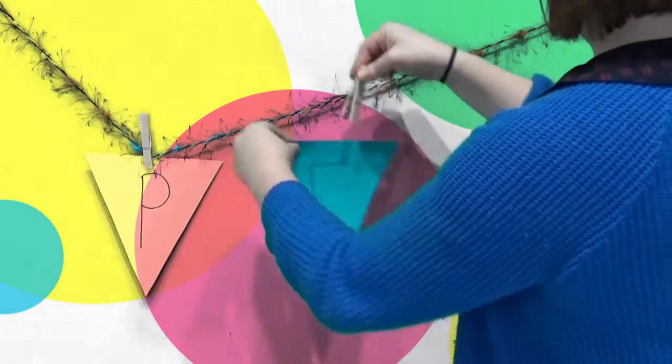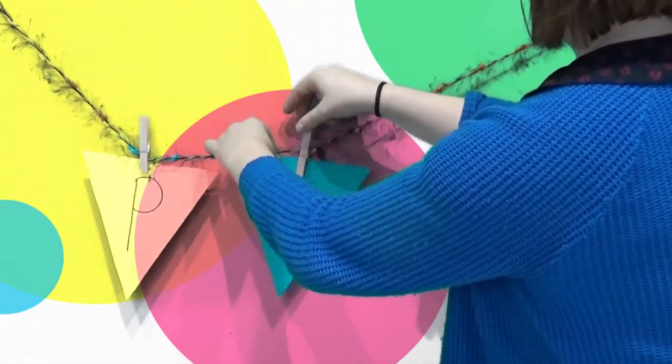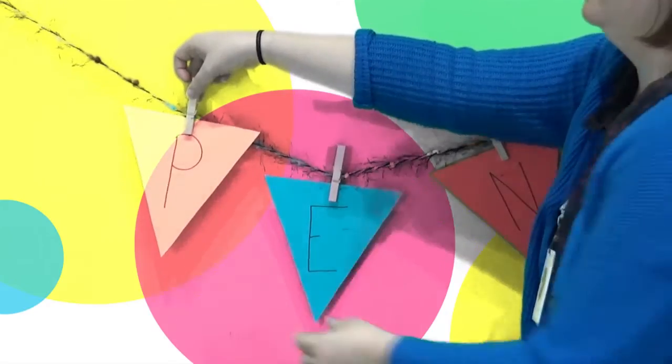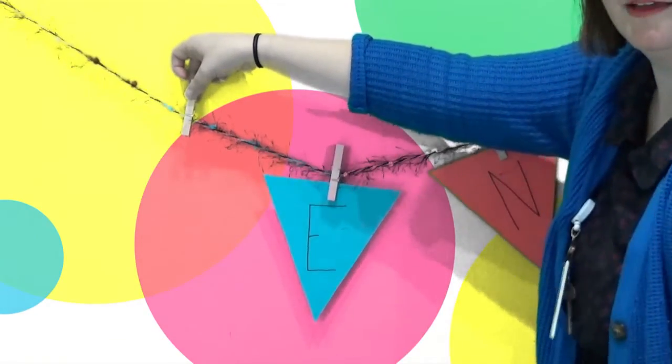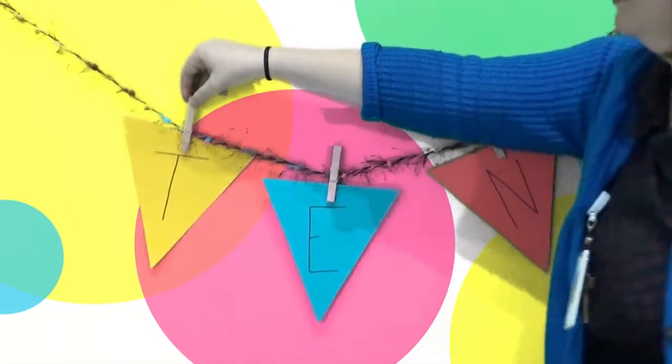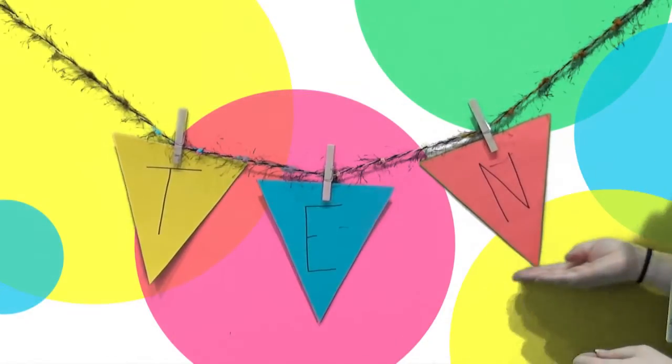Or, spell out a simple word like pen. Sound out each letter with your child as you put them on the string. Replace the first letter with another, maybe a T. Now sound out the new word with your child. Ten. Word families are a wonderful way to get your child comfortable with reading.